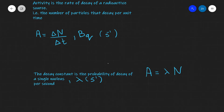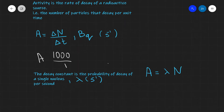For instance, if we were to have 1000 decays per one second, this means that our activity will be equal to 1000 Becquerel. So this means there are 1000 decays per second.